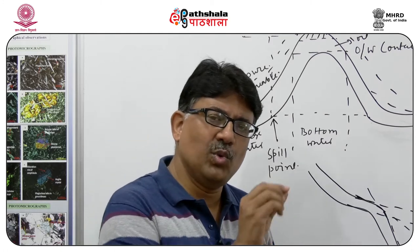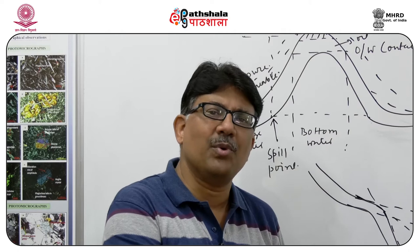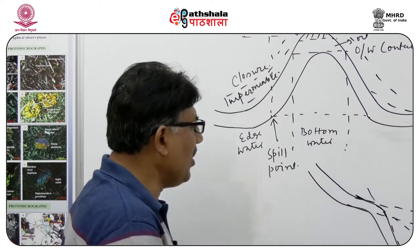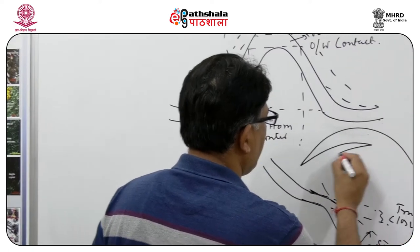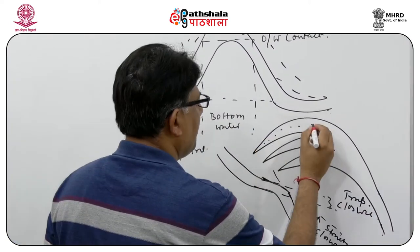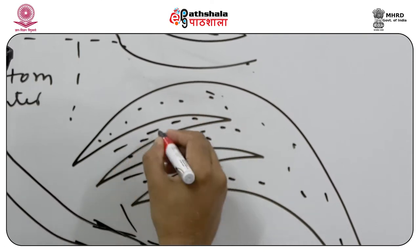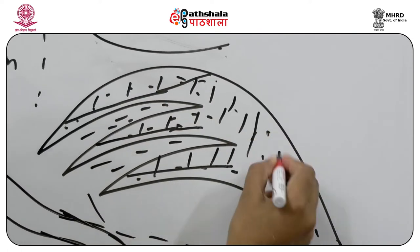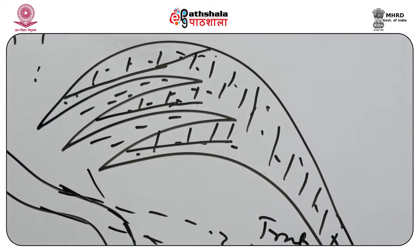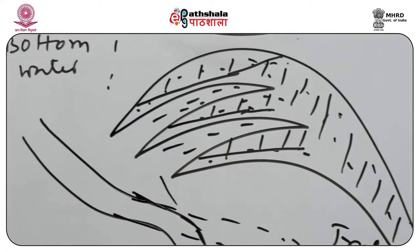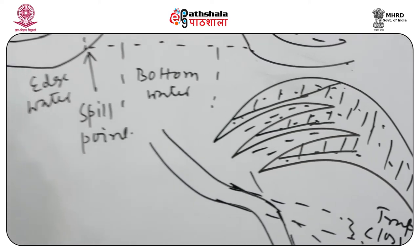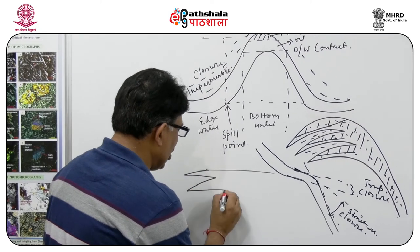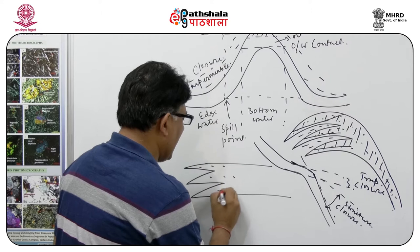Now I come to a discussion of what we refer to in a trap as the gross pay and the net pay. Let us think of a situation where I get an intertonguing relationship of two facies — that is a sandstone and shale — showing an intertonguing relationship. Then the entire thing is deformed.